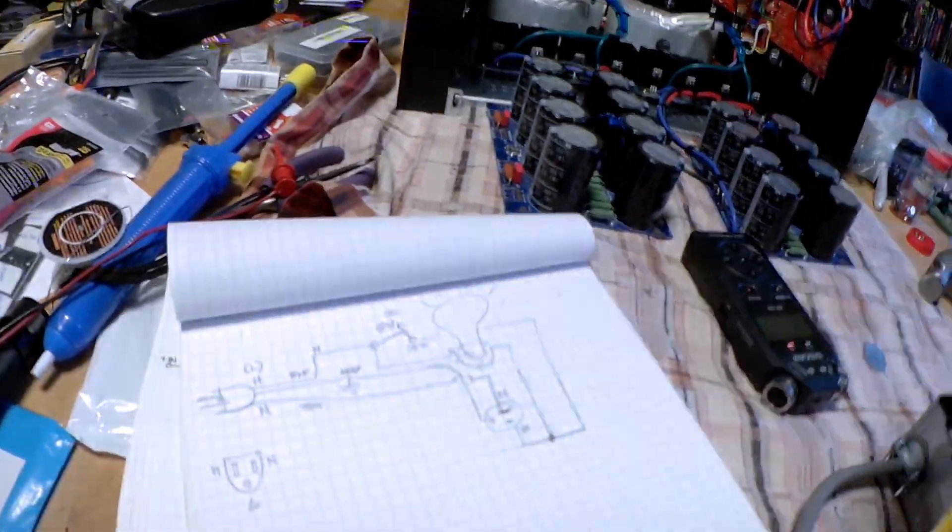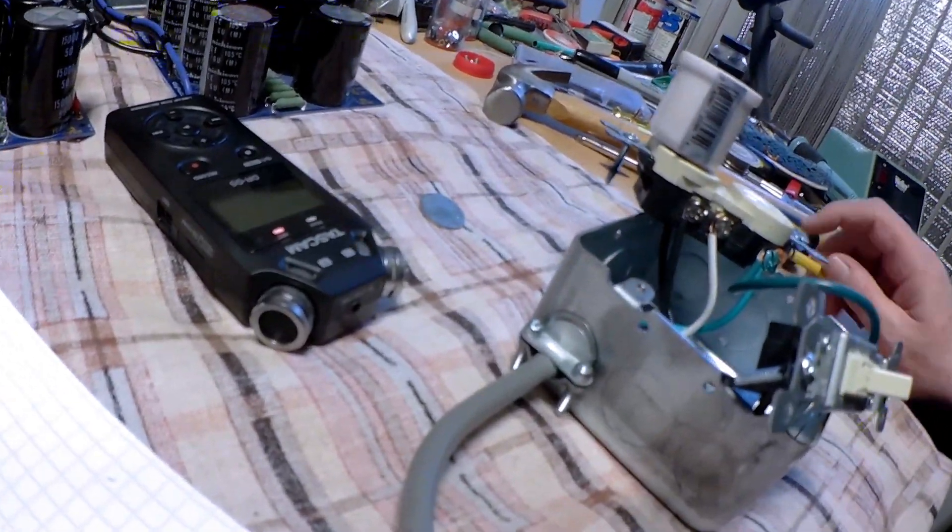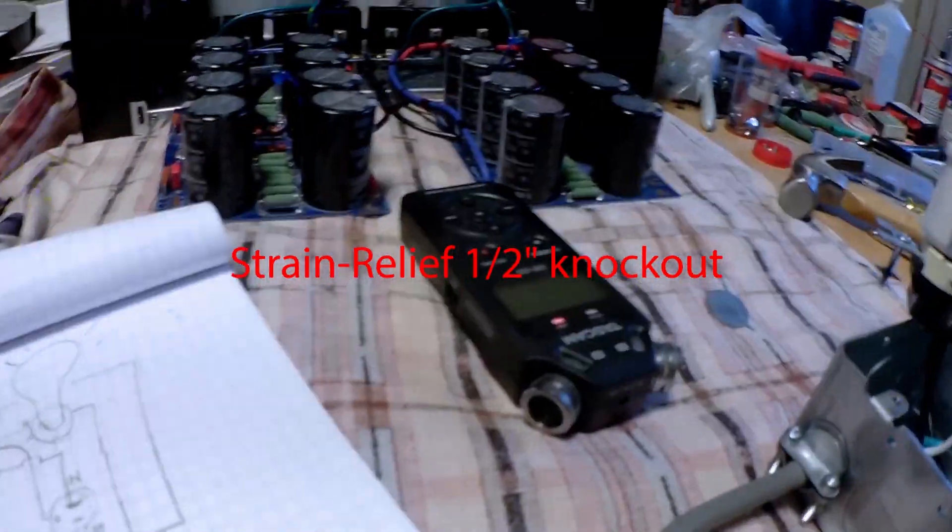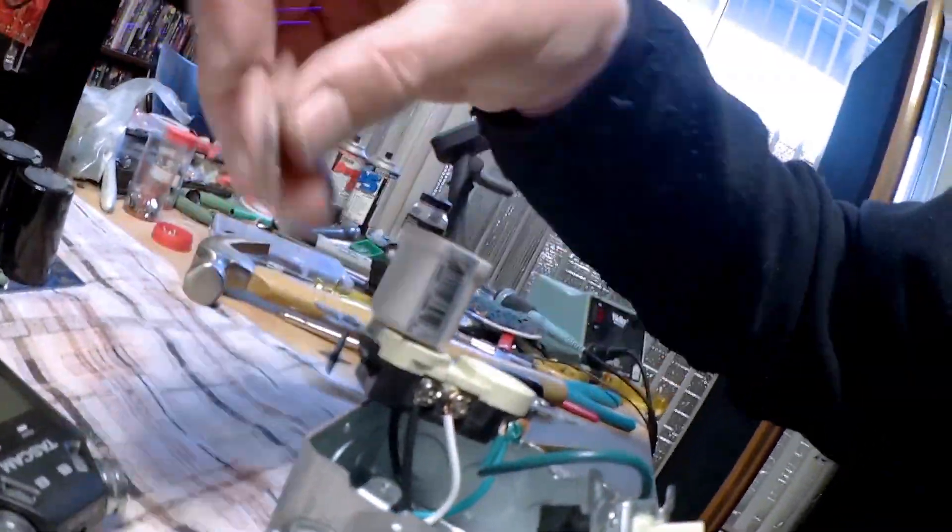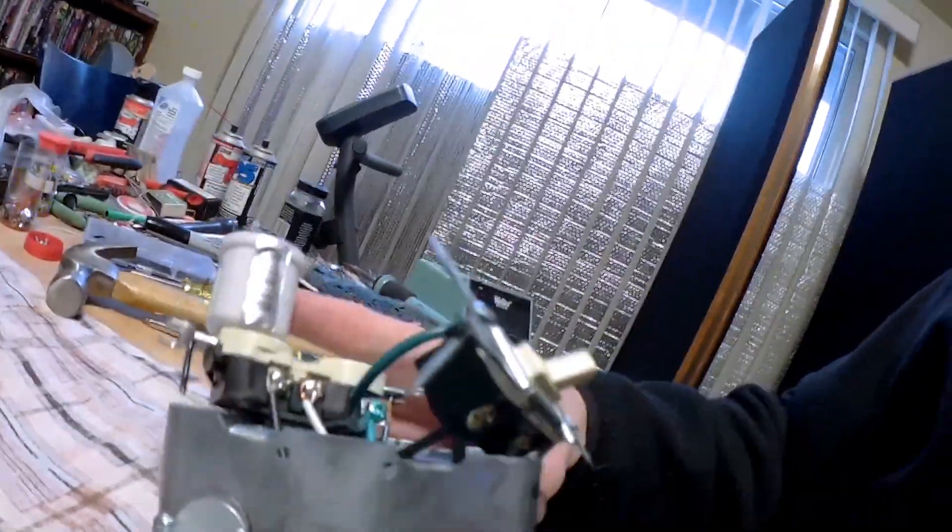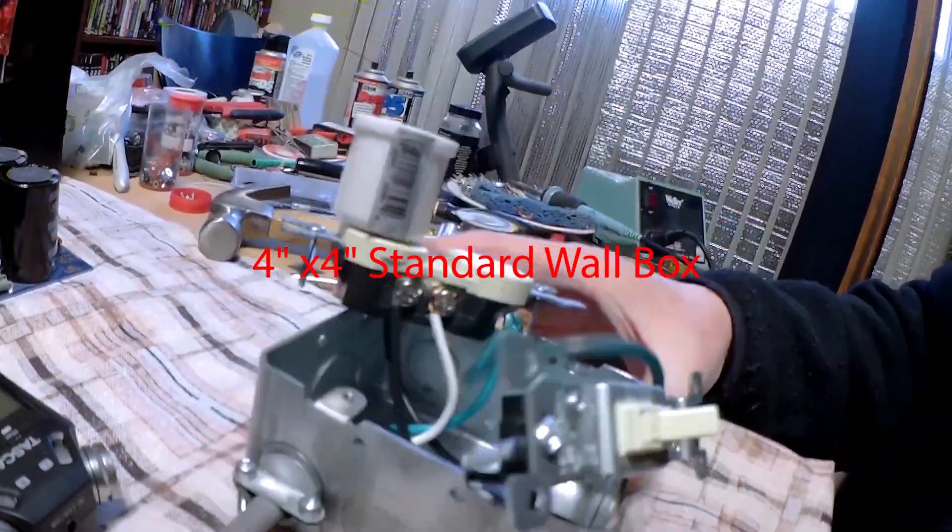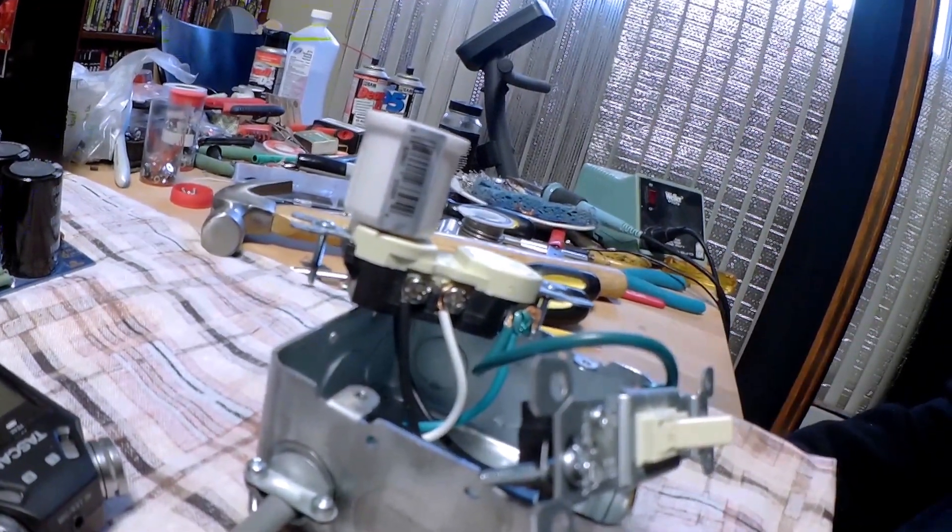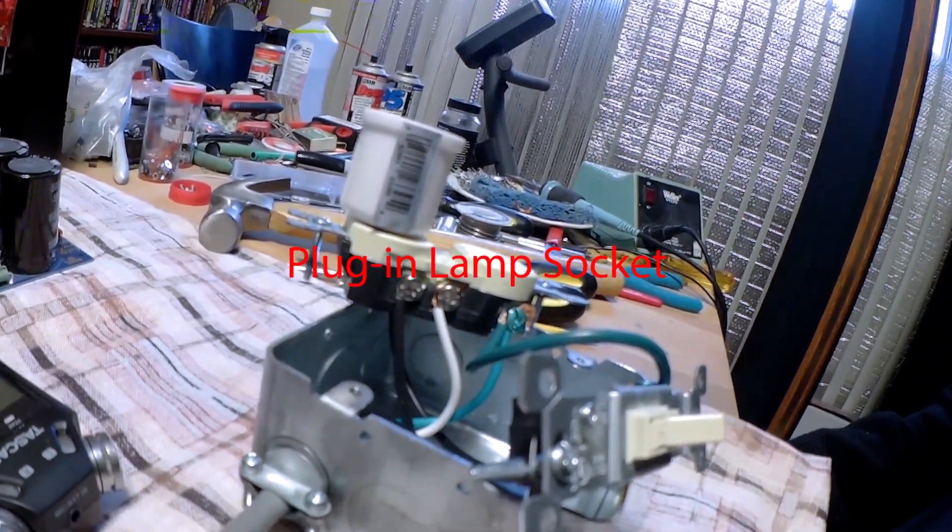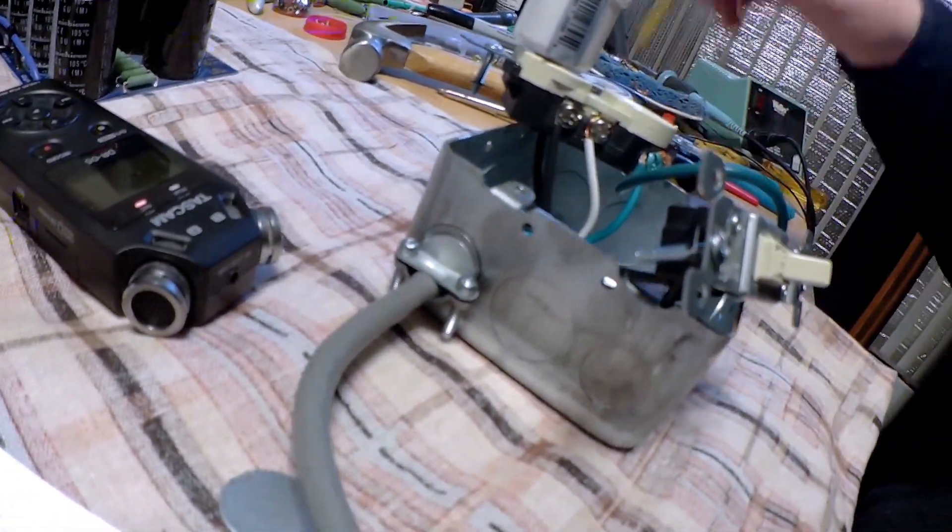If you look, we have our outlet coming in, going through this guy which is a little pinch strain relief thing, a knockout. You knock the knockout out of the 4x4 standard galvanized case. I wanted this mainly so it would be heavy and sit on the table, and power cords wouldn't be pulling it off the table.